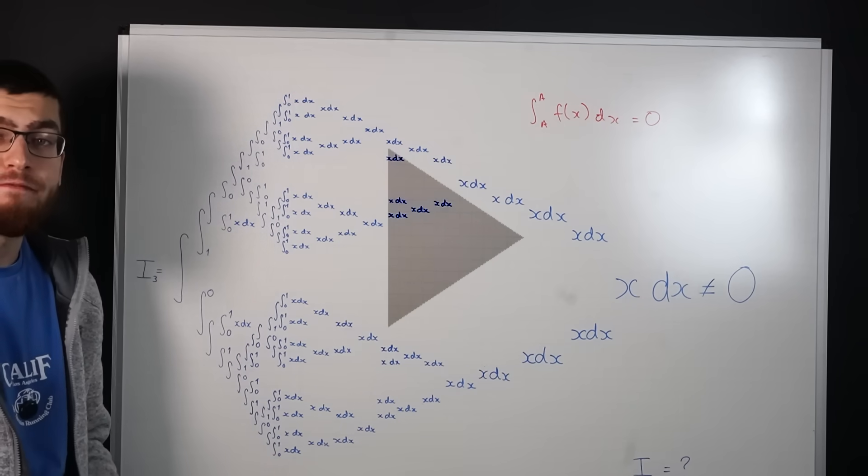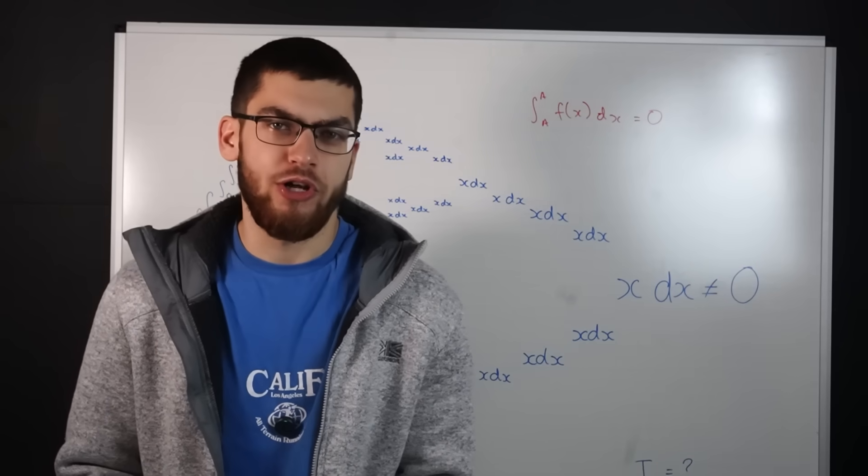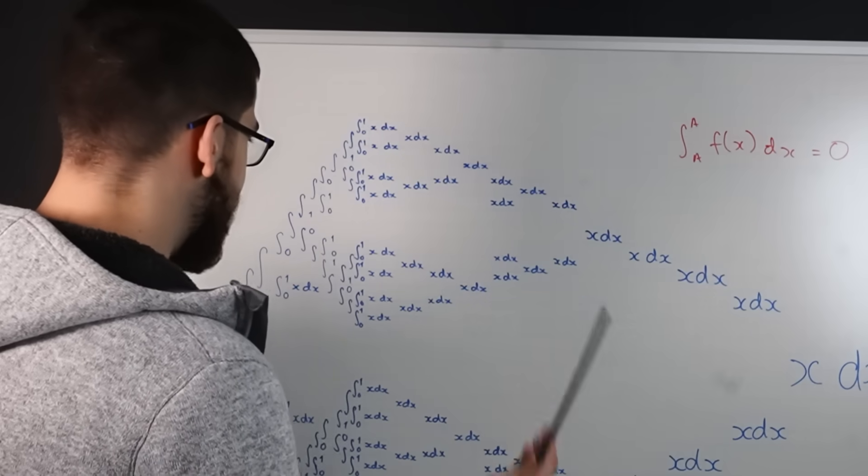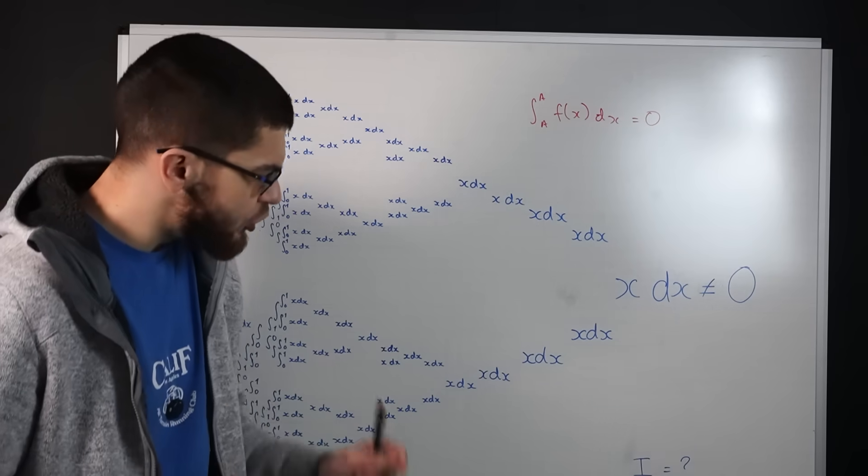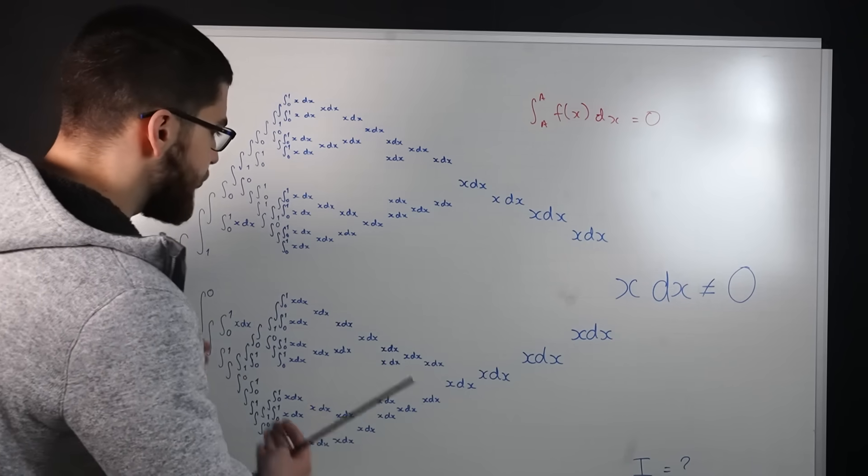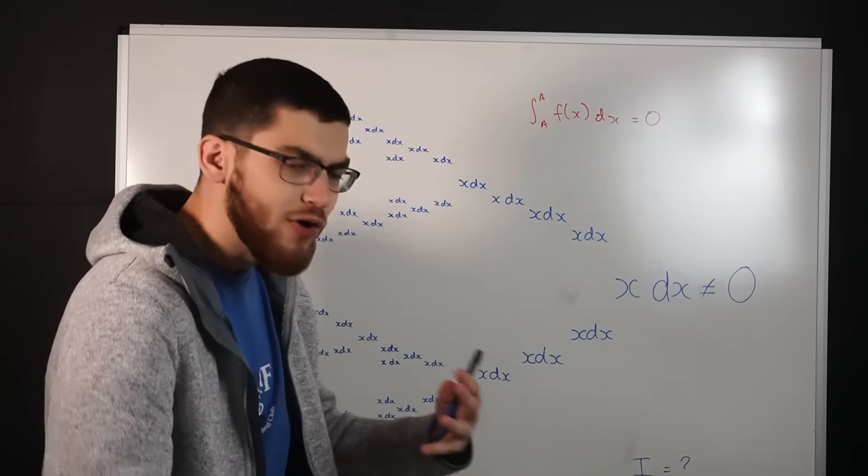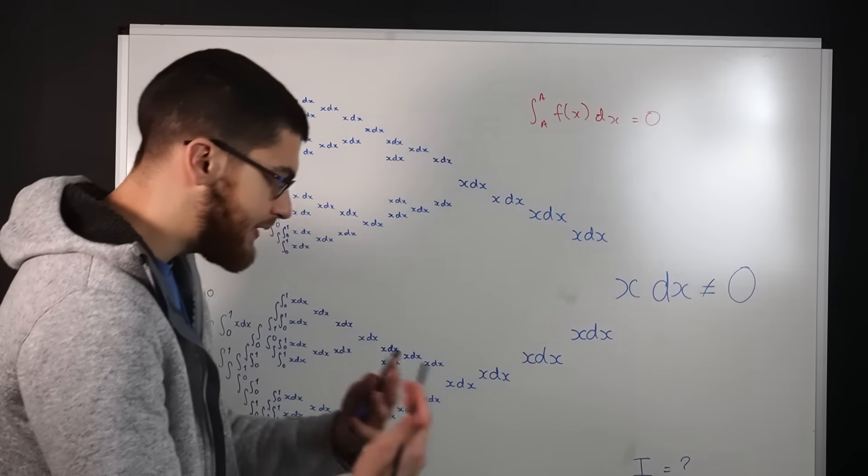Pause the video now if you want to try it for yourself. So when I first saw this question my first thought was what the actual flipping heck is this? But then I thought well it's just a repeating pattern so if we find out what's repeating we should be able to construct a kind of recurring integral and get our Sapinski integral.